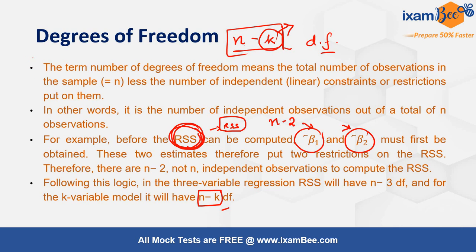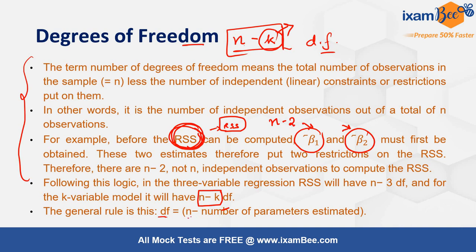I hope with these real-life examples you can now relate to what exactly degrees of freedom is. This is a very technical and frequently used concept in econometrics and statistics. Prepare each and every topic well — there may not always be a direct question on such concepts, but they are implicitly used in many questions. The general rule is: n (total observations) minus the number of parameters that need to be estimated.